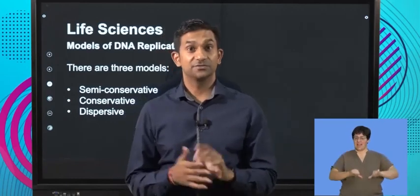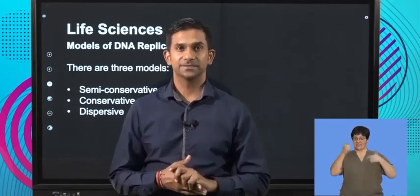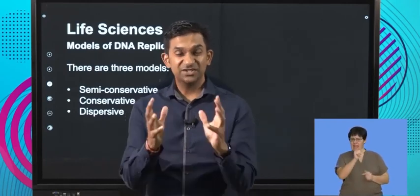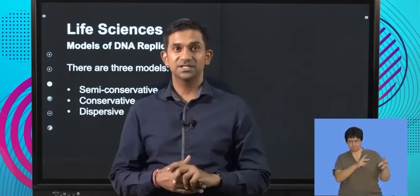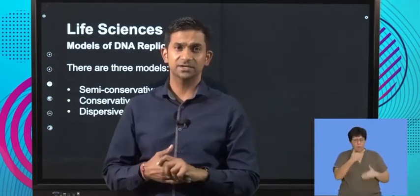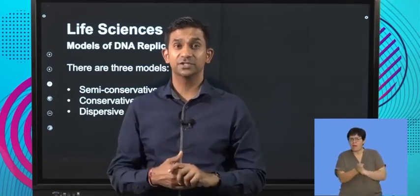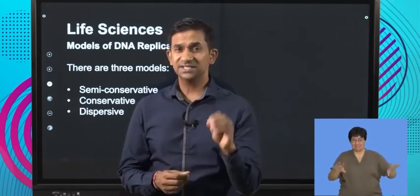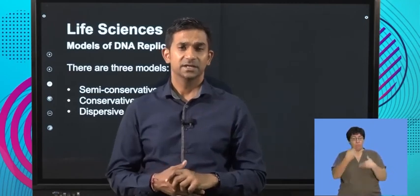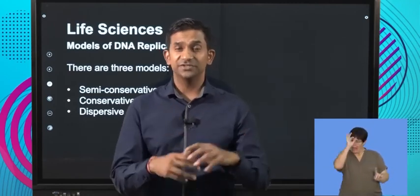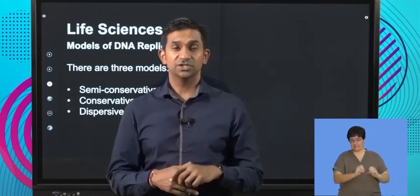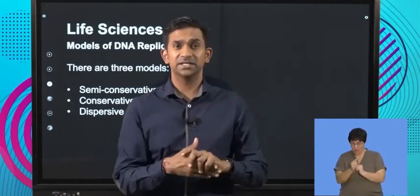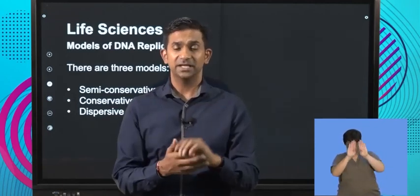Welcome back life science learners to our final installment. We've looked at the process of DNA replication and tried to unpack that process by looking at the different processes that occur to produce what we refer to as two identical copies. This process is highly accurate — there's significant proofreading of the DNA which ensures that any mistakes that occur when the template is being copied are corrected.